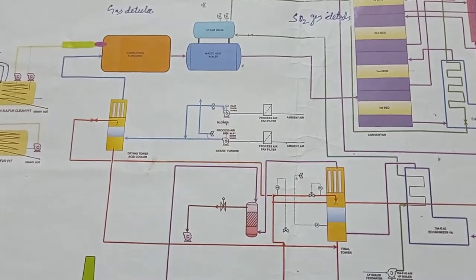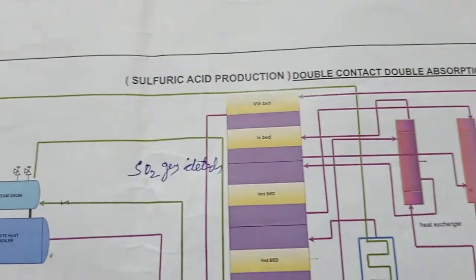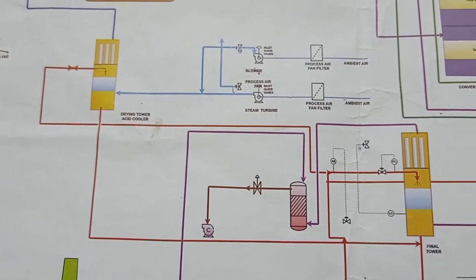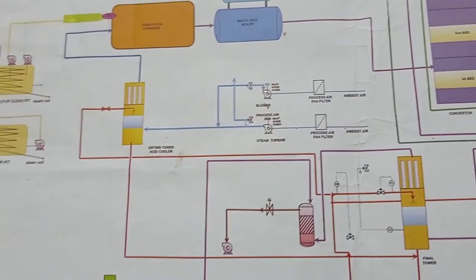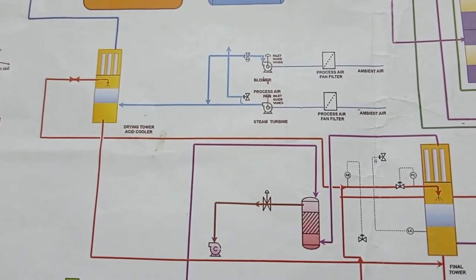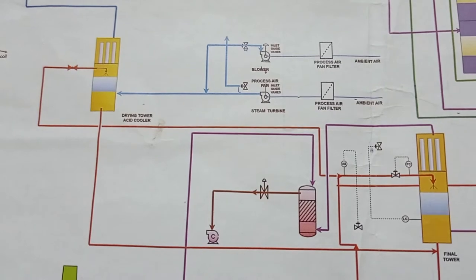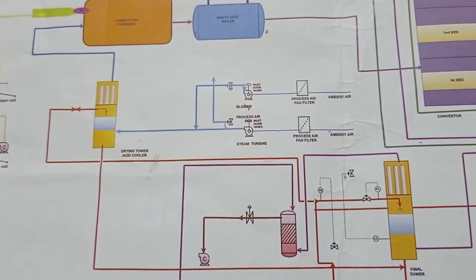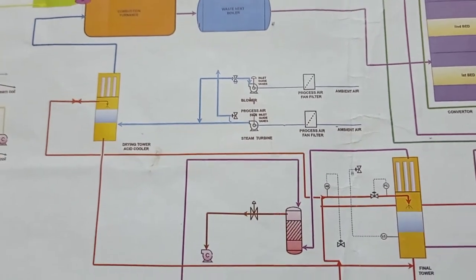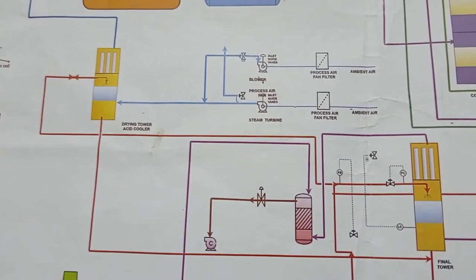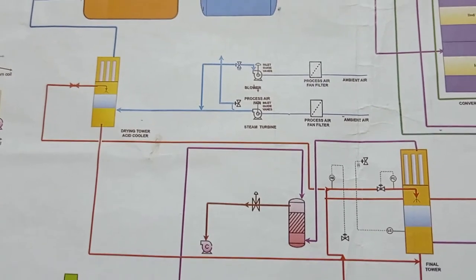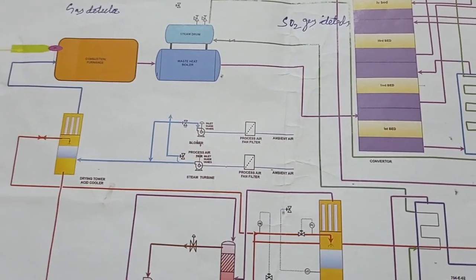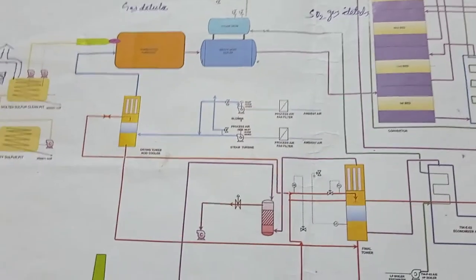This process is DCDA — double contact double absorption. We contact SO2 and SO3 gas one time, and then we contact them again — double contact — so to 98% we can remove SO2/SO3 contaminants from the air. After that, double absorption: whatever gas has been absorbed into sulfuric acid, if there is a remaining 5 or 10 percent, we contact that again also. This is how we achieve 99.99% removal of sulfur from the process gas.